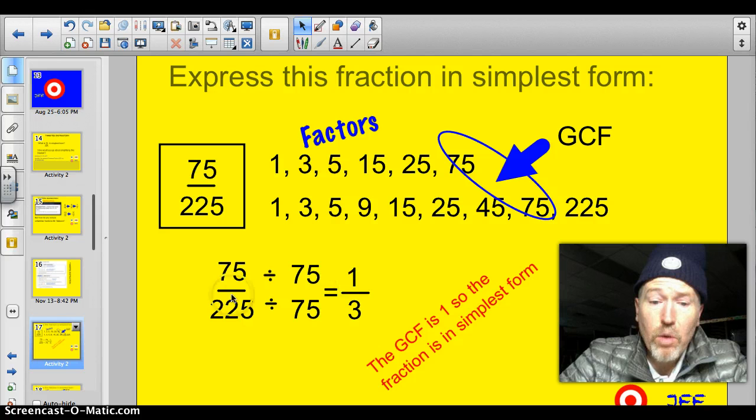I did it in one step. 75 divided by 75 is 1. 225 divided by 75 is 3. One third. One is my greatest common factor. Both numerator and denominator. I'm done.